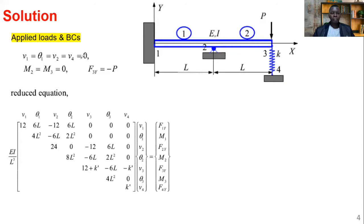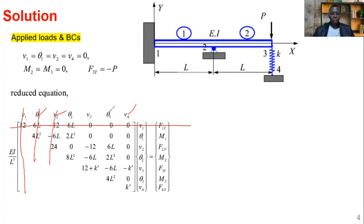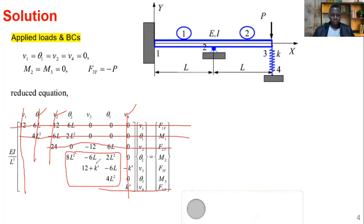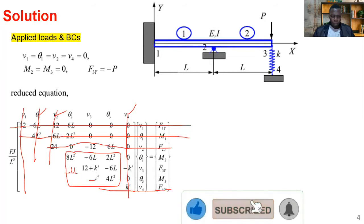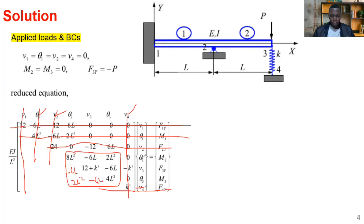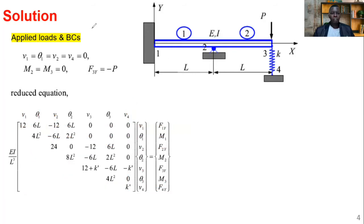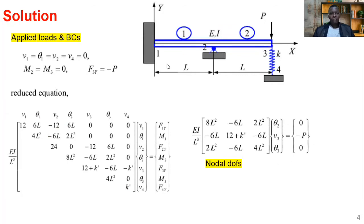After removing columns and rows for v1, theta1, v2, and v4, we are left with theta2, v3, and theta3 as the unknown degrees of freedom. The reduced stiffness matrix contains entries including minus 6L, 12 plus k-prime, minus 6L, and 4L squared. The reduced equation relates the three unknowns theta2, v3, theta3 to the loads M2, F3y, and M3.